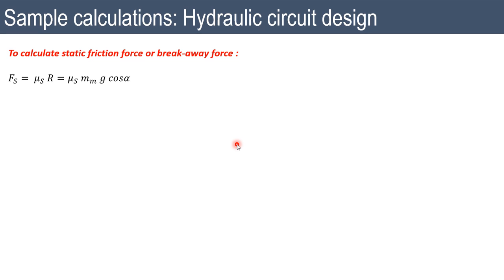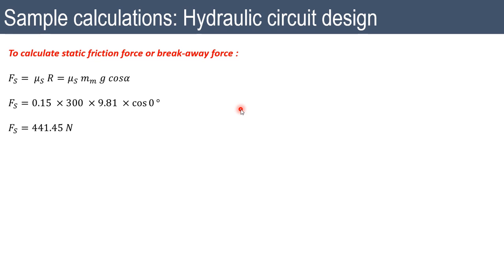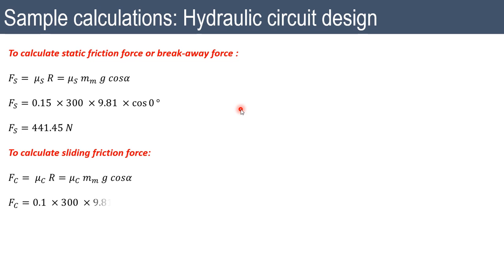Static friction (breakaway) force: Fs = μs·mm·g·cos(α) = 0.15 × 300 × 9.81 × cos(0) = 441.45 N, since the mass moves horizontally (α = 0). Sliding friction force: Fc = μc·mm·g·cos(α) = 0.1 × 300 × 9.81 × 1 = 294.3 N.